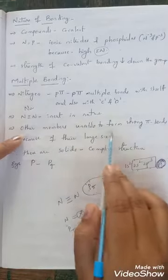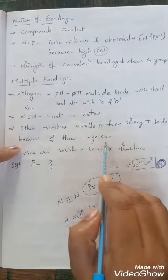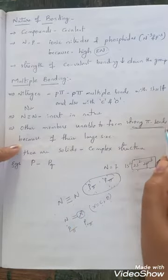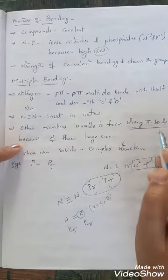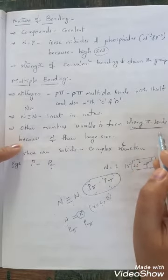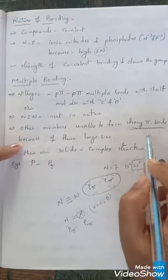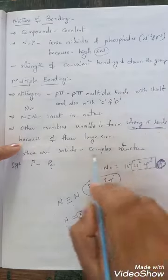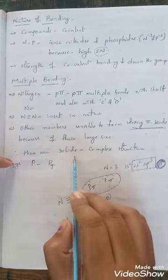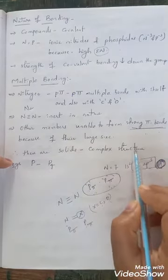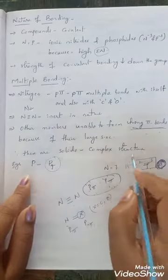Other members of group 15 are unable to form strong pi bonds because of their larger atomic size — they can form pi bonds but they are weak. Therefore, they exist as solids with complex structures. For example, phosphorus exists as P₄, which is white phosphorus.